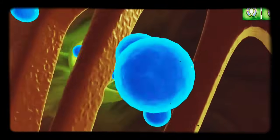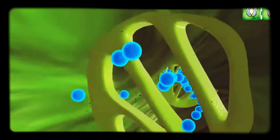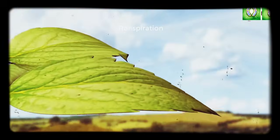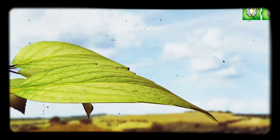About 95% of the water absorbed is lost through the stomata present in the leaves. This process is known as transpiration.